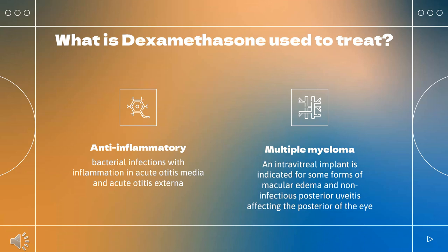Dexamethasone and ciprofloxacin otic suspension is indicated for bacterial infections with inflammation in acute otitis media and acute otitis externa. Intramuscular and intravenous injections are indicated for a number of endocrine and rheumatic conditions.